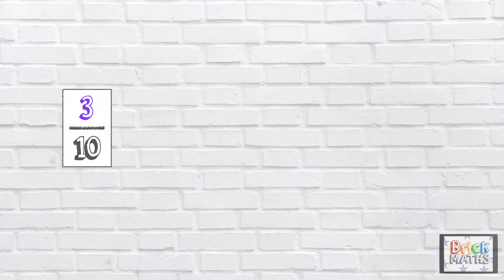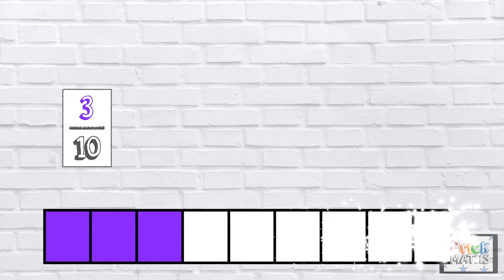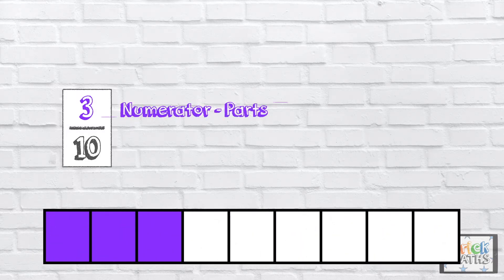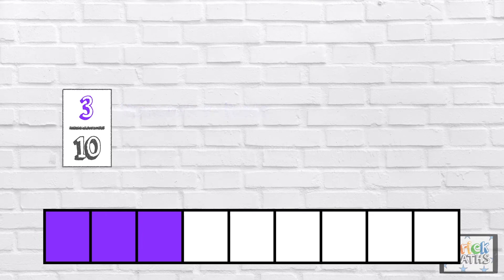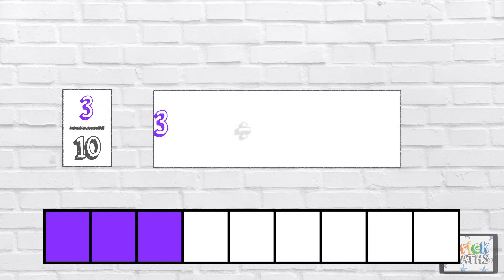Here is a fraction: 3 tenths. Fractions show us how many parts we have of the whole. For example, there are 3 out of 10 parts that are shaded purple. But fractions are also divisions, so this fraction is the same as 3 divided by 10.